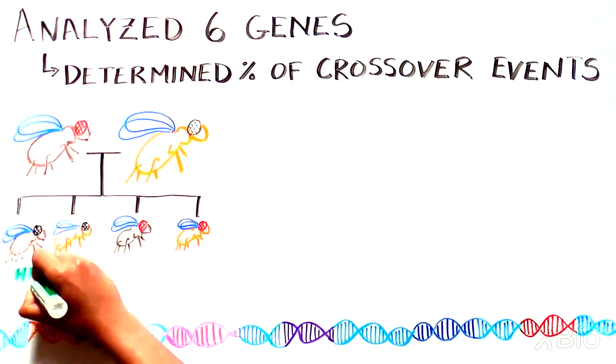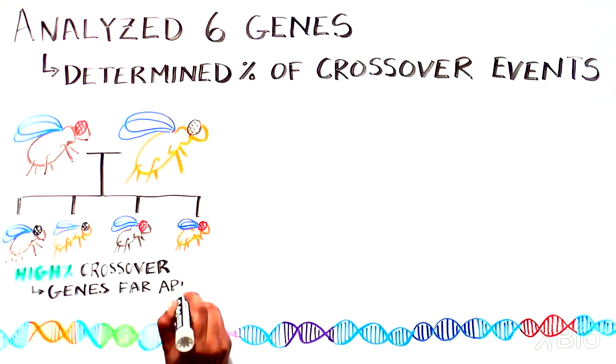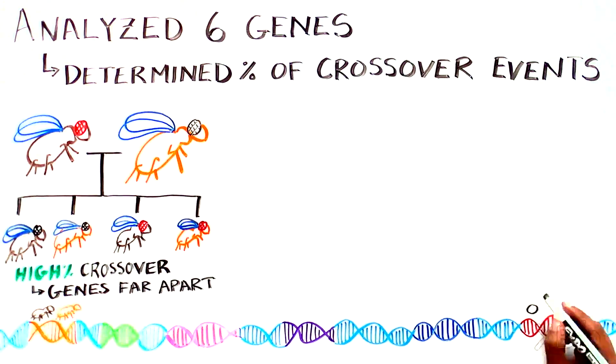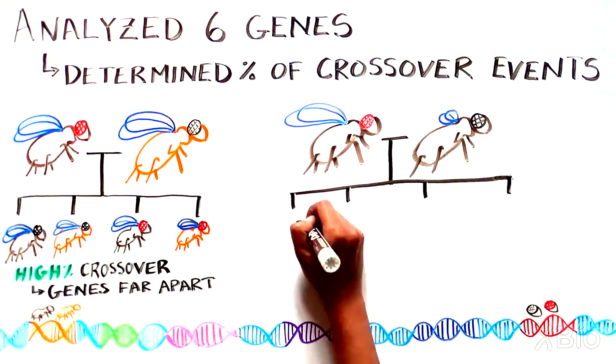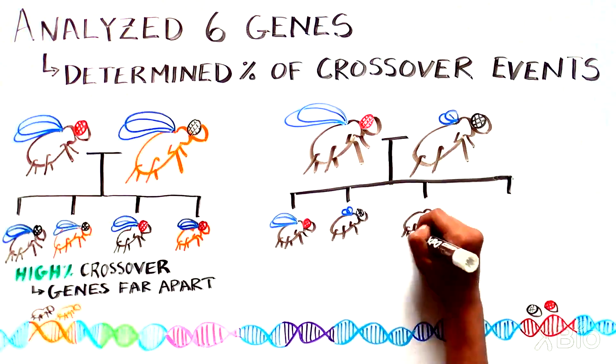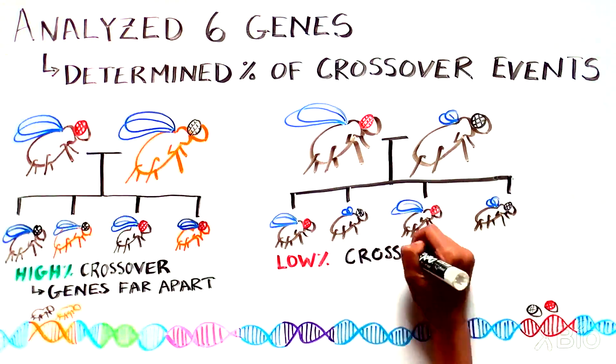And the lower percentage of crossing over, the closer the two genes were. By this method, Sturtevant deciphered the order of the six genes on the chromosome and approximately how far apart each one was from the other.